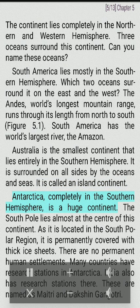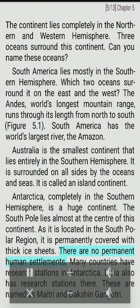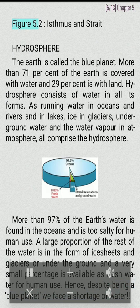Australia is called an island continent as it is surrounded on all sides by the oceans and seas. Antarctica, completely in the southern hemisphere, is a huge continent. The South Pole lies almost at the center of this continent. As it is located in the South Polar region, it is permanently covered with thick ice sheets. There are no permanent human settlements.